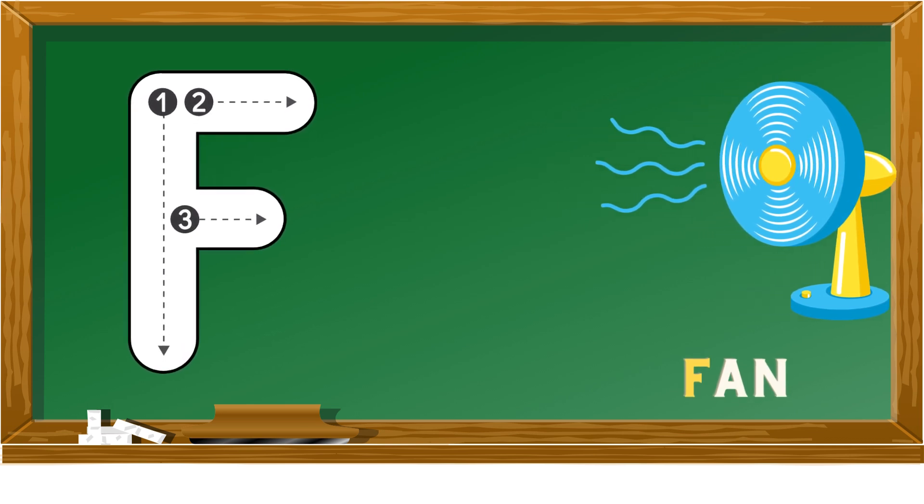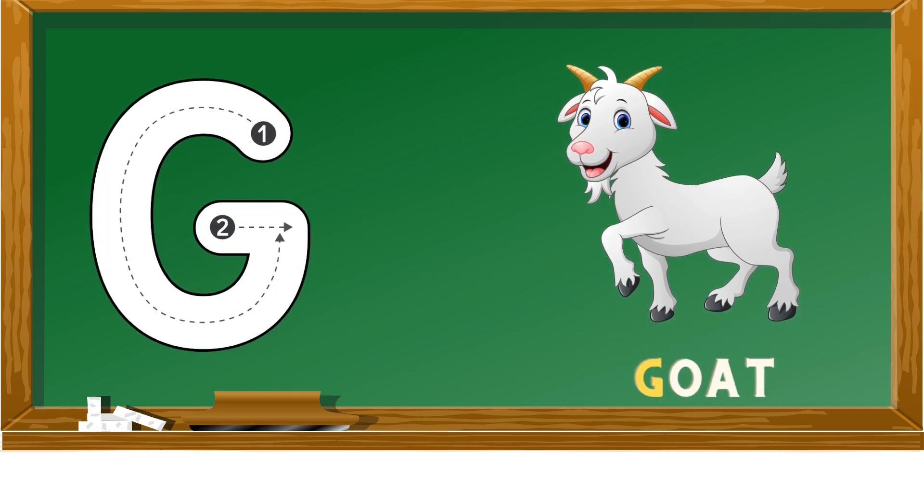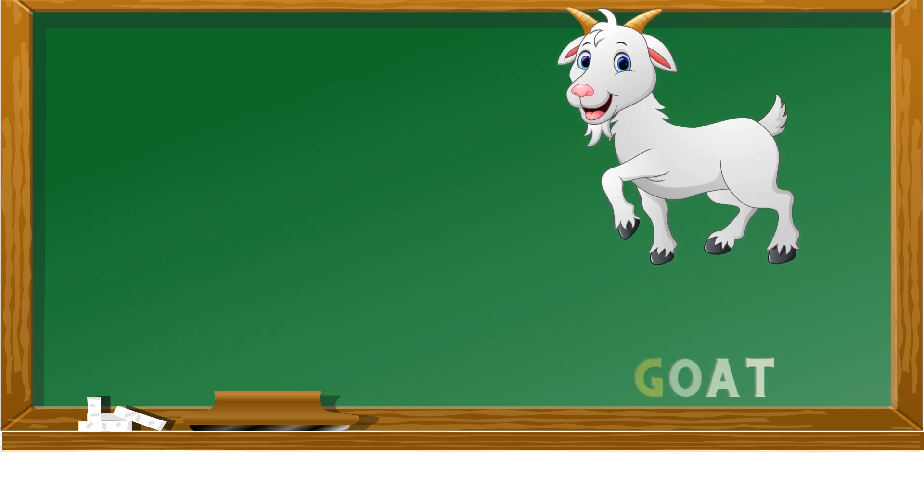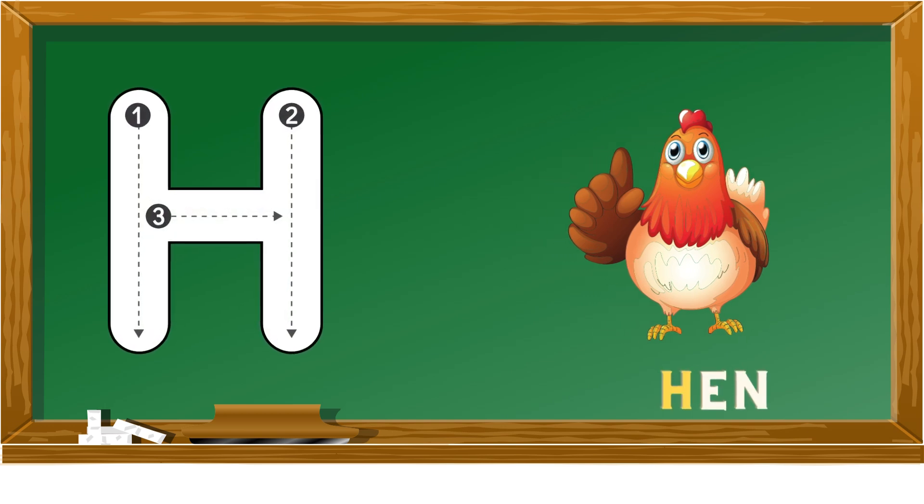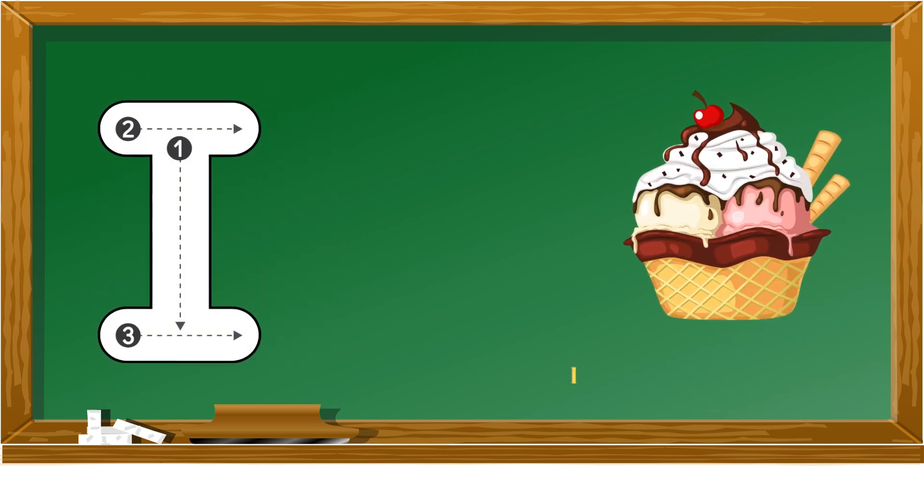G is for goat, H is for hen, I is for ice cream.